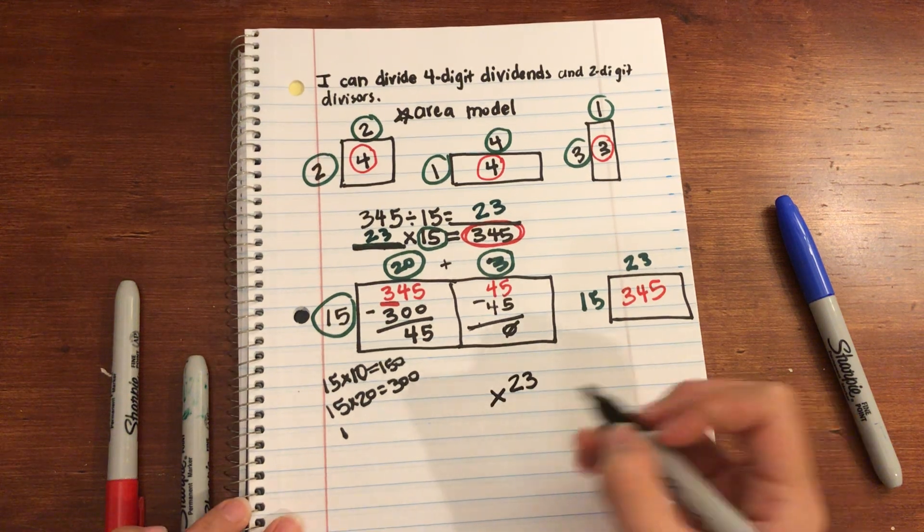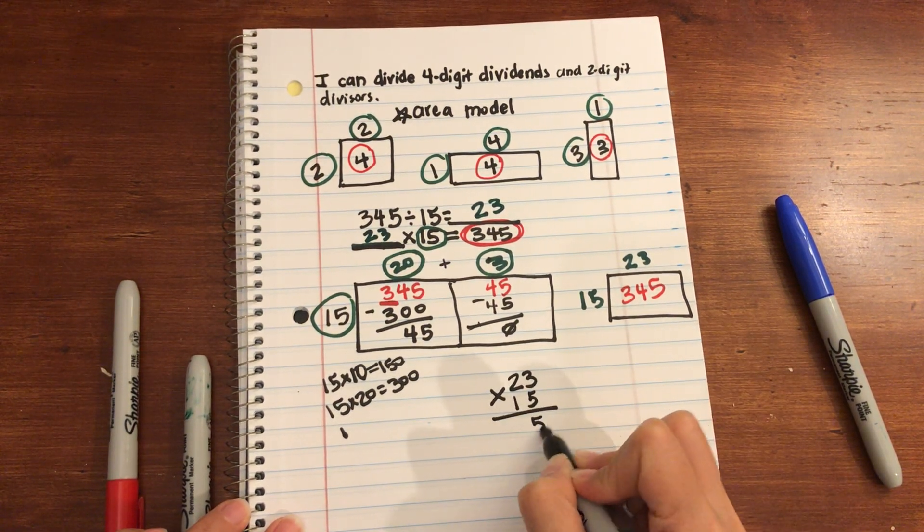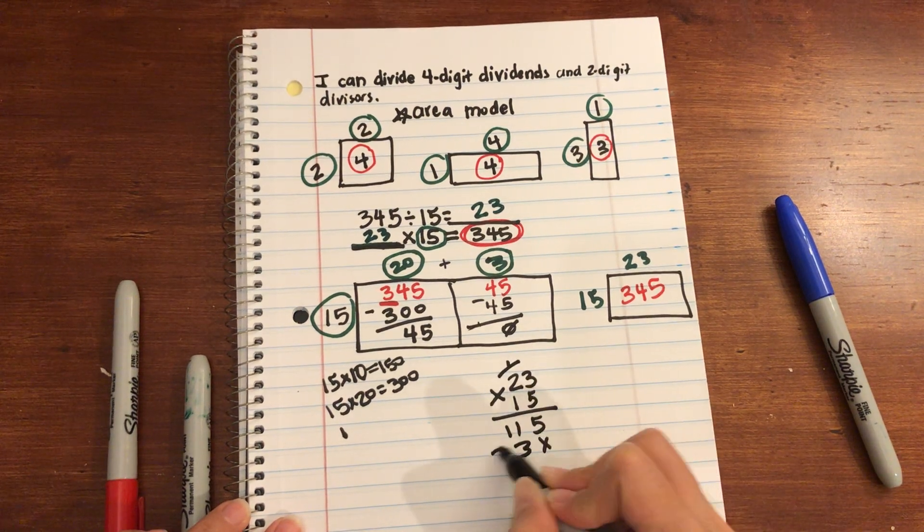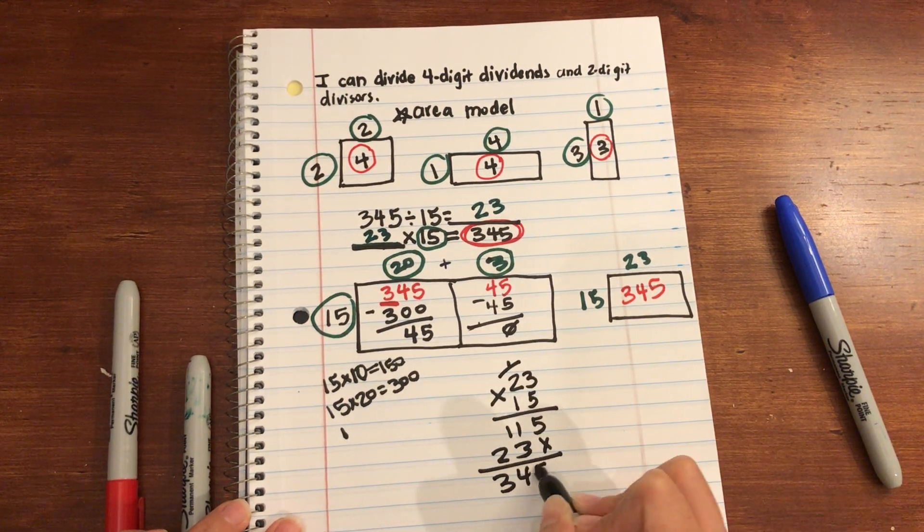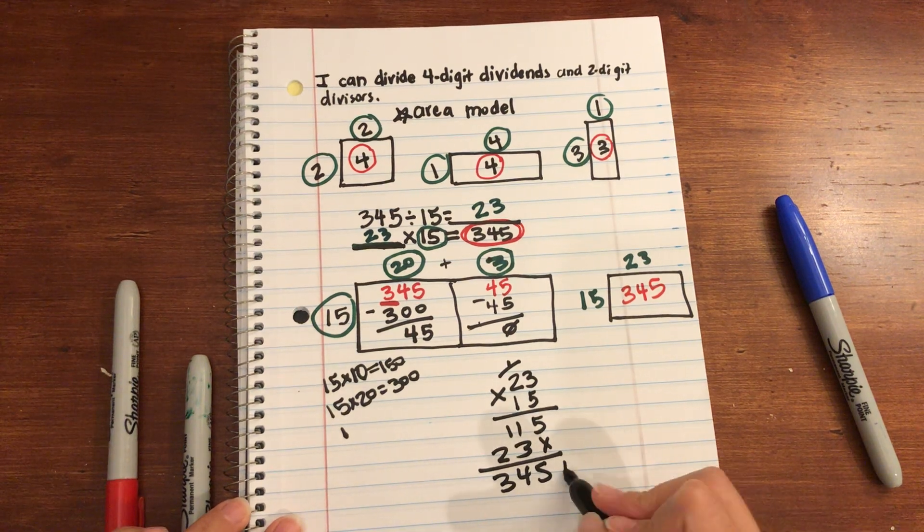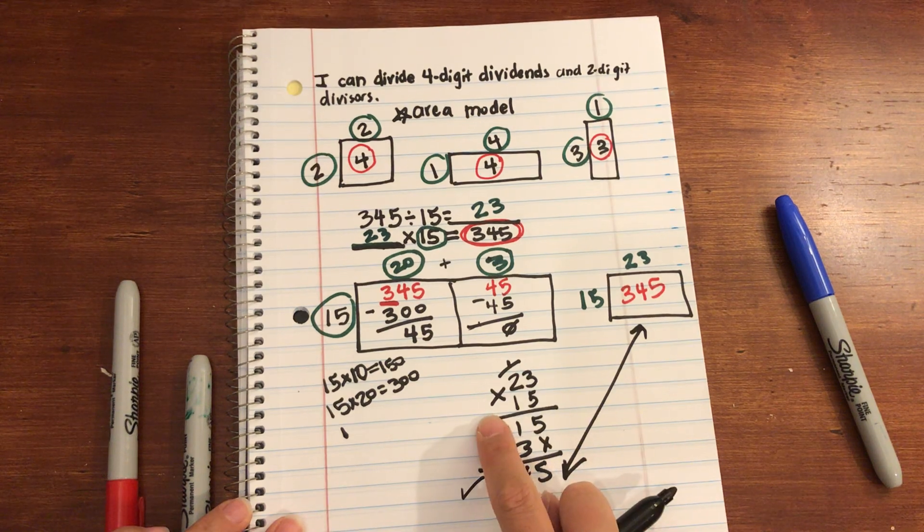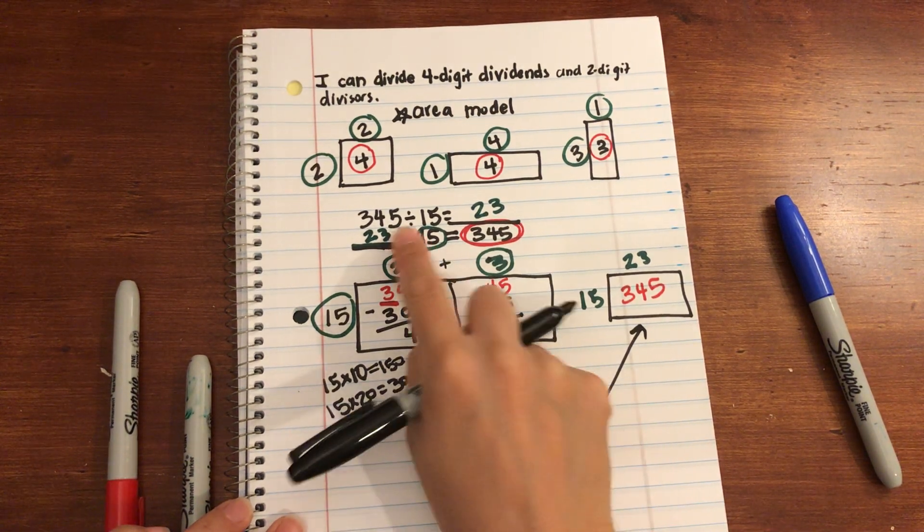Multiplication. So 15 times 23. 5. Regroup. 10. 11. Hold the place value. 3. 2. 345. And we looky there. They're equal. I checked my work using multiplication of a division problem.